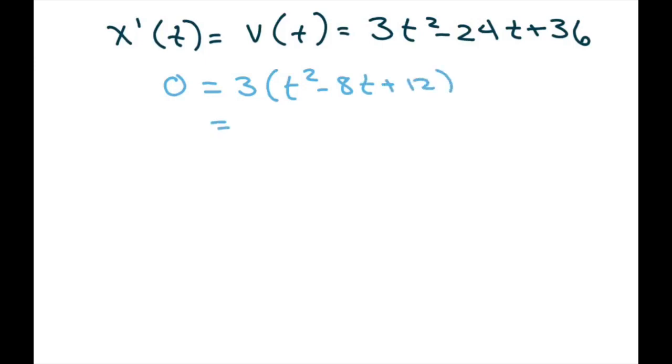And factor, divide by 3 so the 3 goes away. So we're going to have t minus 2 and t minus 6 equals 0. Therefore, we have t equals 2 or t equals 6.